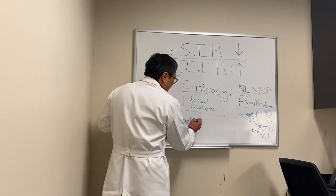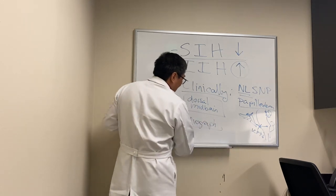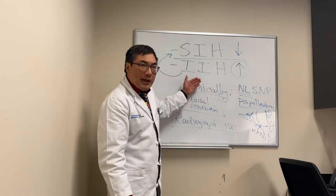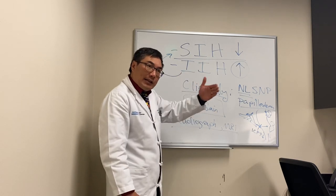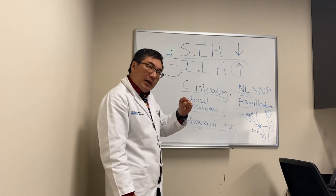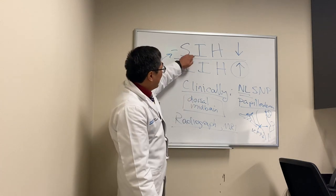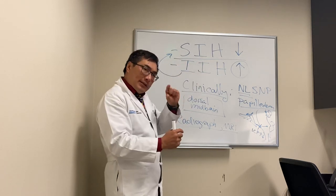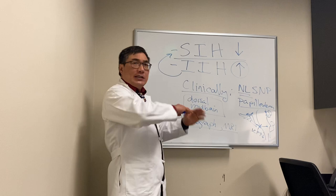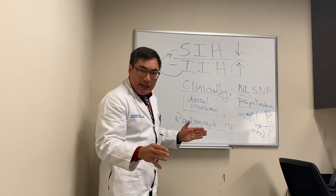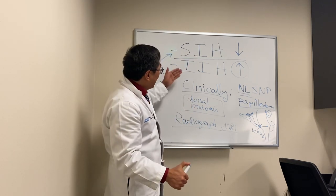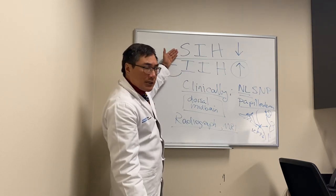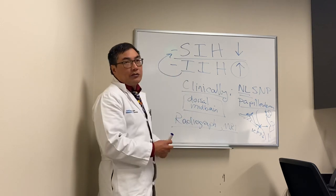Radiographically, we're going to be able to tell the difference as well. On the MRI scan, from increased intracranial pressure — idiopathic intracranial hypertension — we have fluid in the nerve sheath, flattening of the globe, empty sella, and stenosis of the venous sinuses. When you have intracranial hypotension, instead of an empty sella you have a full sella because of venous congestion. We do not see venous sinus stenosis, but instead we see meningeal enhancement because of the venous congestion. So we get a full rather than empty sella and venous congestion with dural enhancement, rather than venous sinus stenosis as in intracranial hypertension.